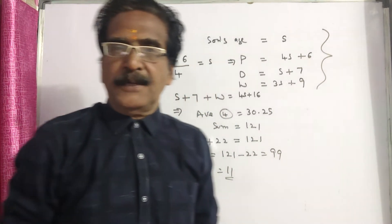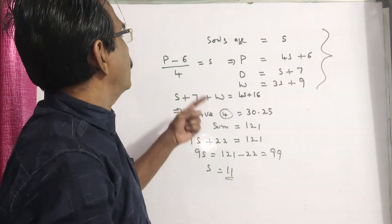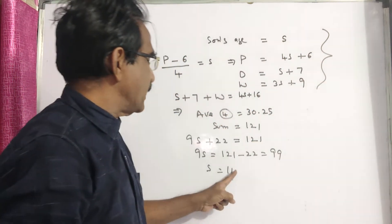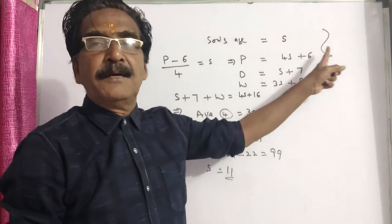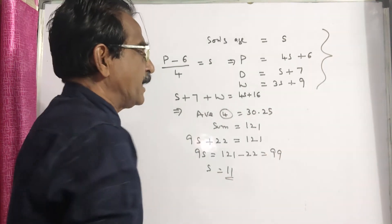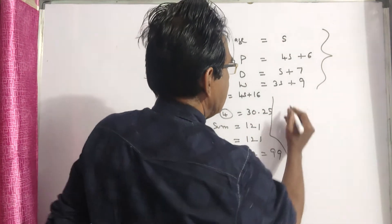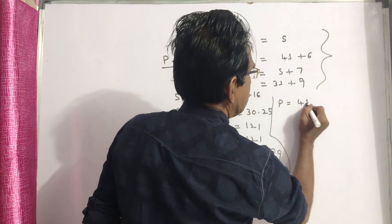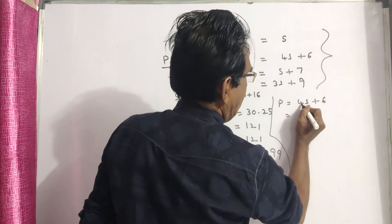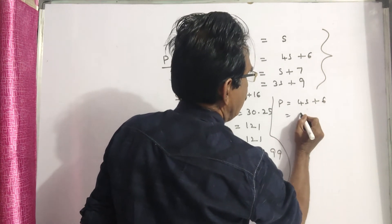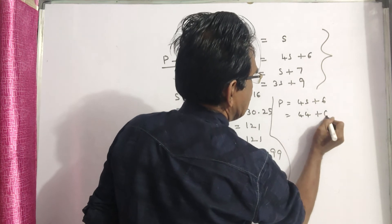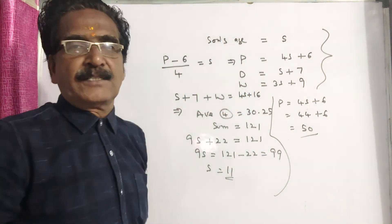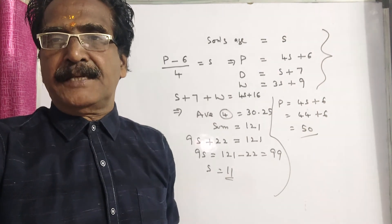We want Panas's age. Panas is equal to 4s plus 6, that is 4 times 11 plus 6, which is 44 plus 6, equal to 50 years. So Panas's age is 50 years. Okay friends, thank you, have a nice day!